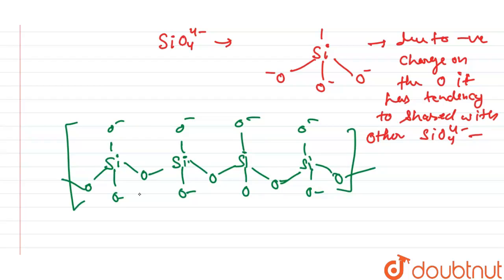So a single chain silicate looks like this. Now, here it is clearly seen that in each tetrahedral unit, two oxygens are shared.